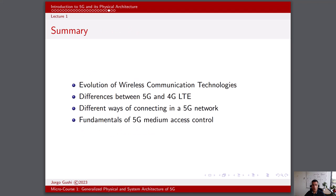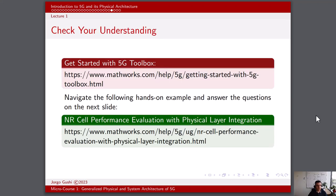As a summary, in this first lecture of the Generalized Physical and System Architecture of 5G microcourse, we covered the evolution of wireless communication technologies from 1G to 5G, the differences between 5G and 4G LTE, the different ways of connecting in a 5G network, and the fundamental concepts of a 5G medium access control or MAC layer. You can get started with the 5G toolbox from MathWorks following the link provided in this slide. This documentation page provides information about the 5G toolbox in general, its capabilities, and how it can be used to understand 5G better.